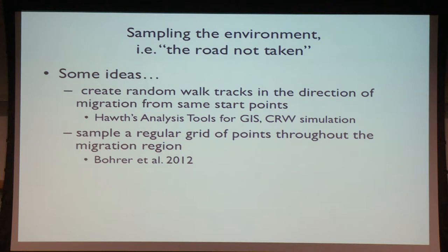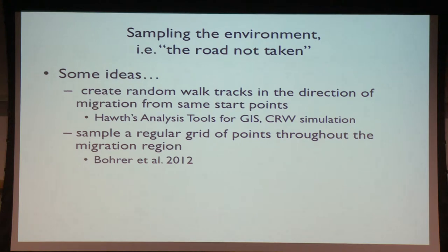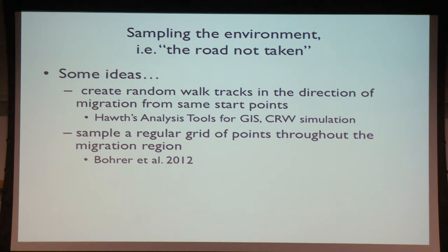This brings up sampling the environment around the track — the 'road not taken,' as Gil called it. There are different approaches: you can get from MoveBank a box or region to annotate. That's what we did in the paper comparing turkey vultures and golden eagles. The other thing you can do is create correlated directed random walks through the region of your tracks and compare environmental variables on those versus the actual track. There are ways to do that fairly easily in GIS.